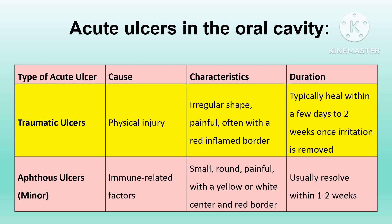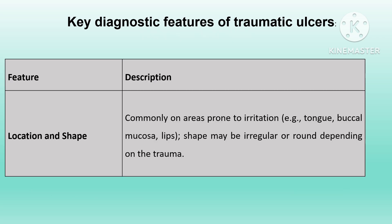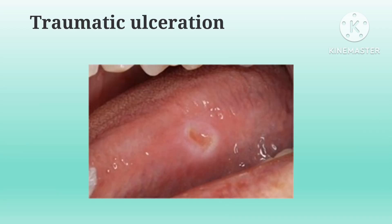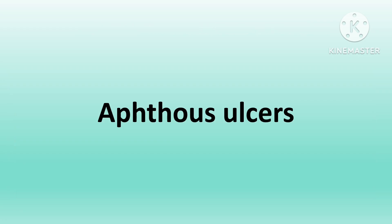Now we will discuss specific acute ulcers. First, traumatic ulcers — as the name suggests, they are due to physical, chemical, or mechanical injury. They are characterized by an irregular shape, often painful, with a red inflamed border. They typically heal within a few days to two weeks once the irritation is removed.